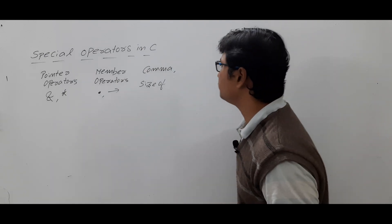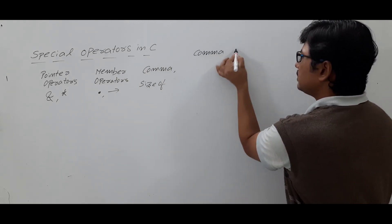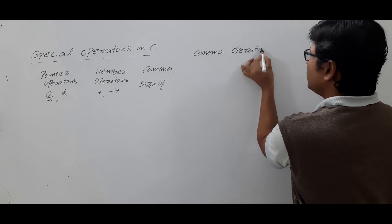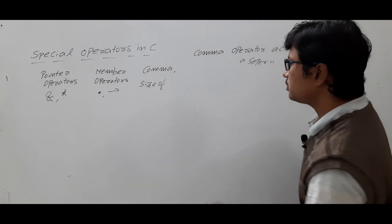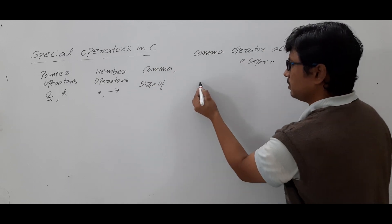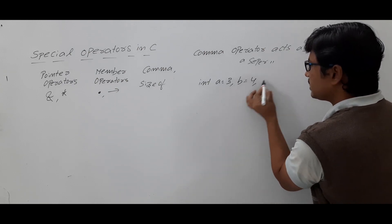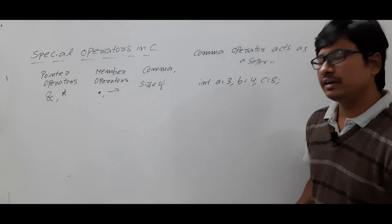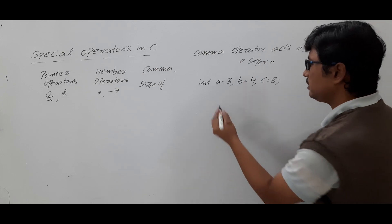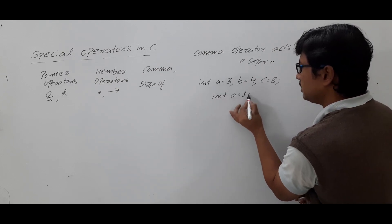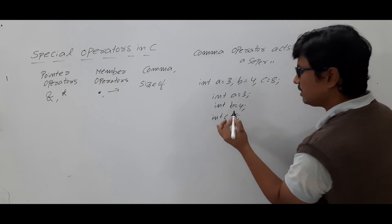The comma operator acts as a separator. For example, when we write `int a = 3, b = 4, c = 8`, the comma is acting as a separator, which is equivalent to writing `int a = 3; int b = 4; int c = 8`.